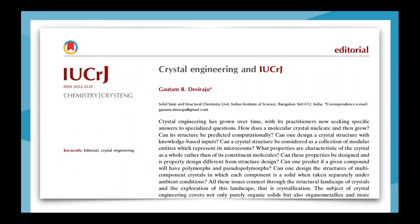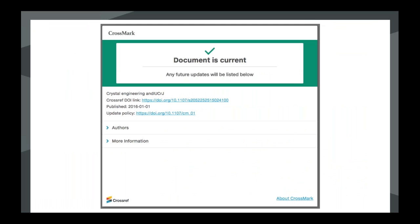But if a publisher has added a Crossmark button to their PDFs — the little circle with the flag in the top left-hand corner — you can click on that button from within the PDF, and providing you're online, it'll pop up a webpage. This Crossmark box gives the latest status of the content: confirmation that the document is up to date, a Crossref DOI link back to the publisher-maintained copy, a link to the publisher's policies on updates, and a note that any future updates will be listed below. The box checks the Crossref database in real time and pulls back the latest status, even if the article is several years old.